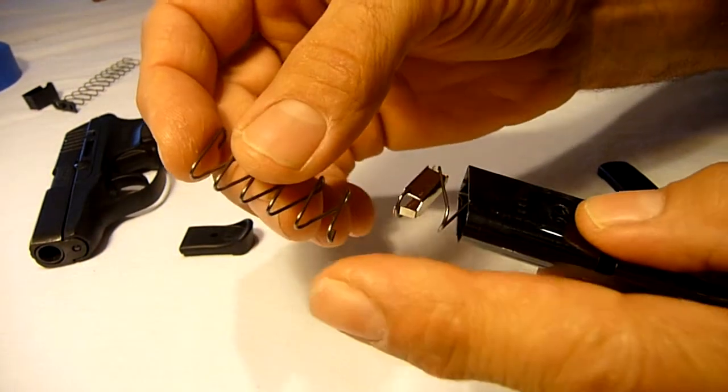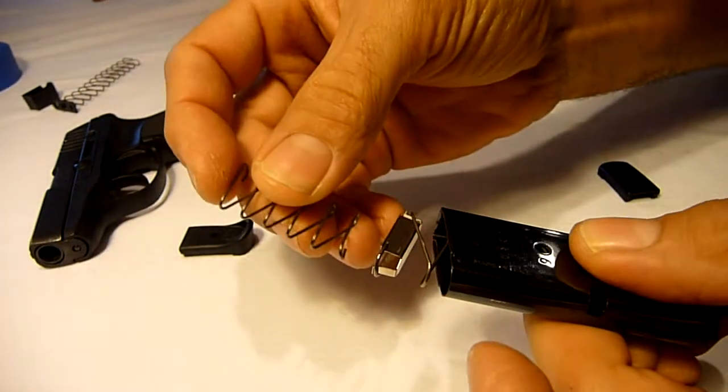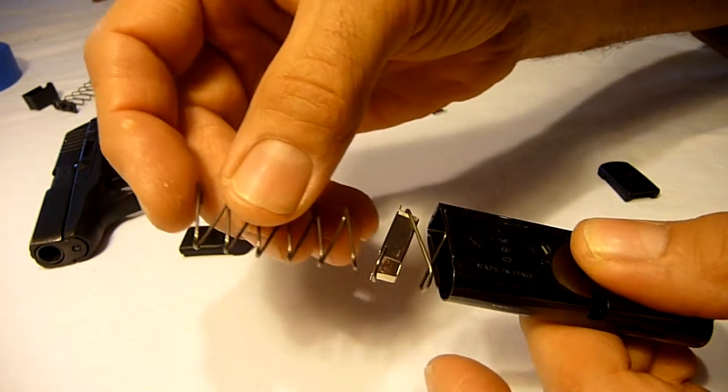Insert the small spring so that the leading end is toward the round side of the magazine and inside the connecting cup. The springs stack end to end.